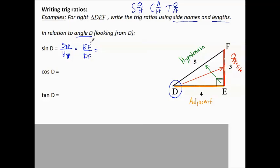That is using the side names. This is the way to write it according to the side names. Then, using the lengths, opposite is 3, hypotenuse is 5, so 3 over 5. Side names and lengths. This is with the names, and this is for the lengths.